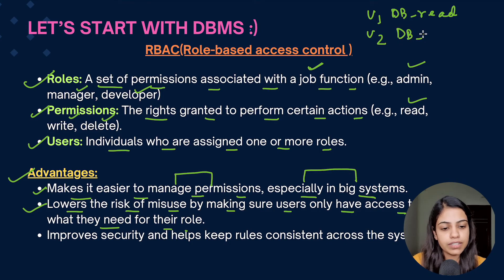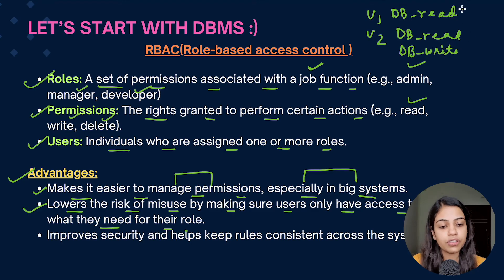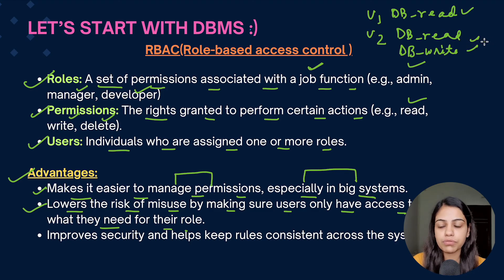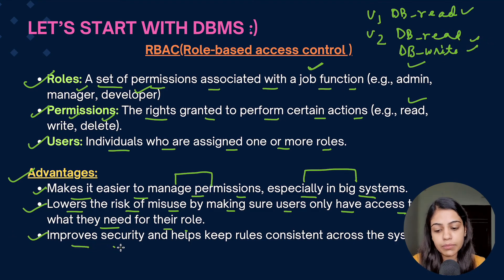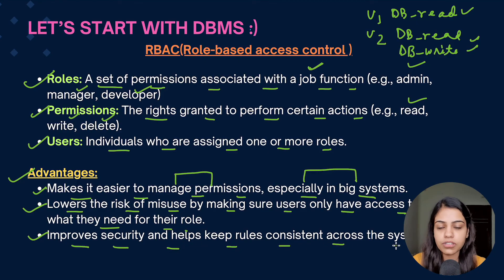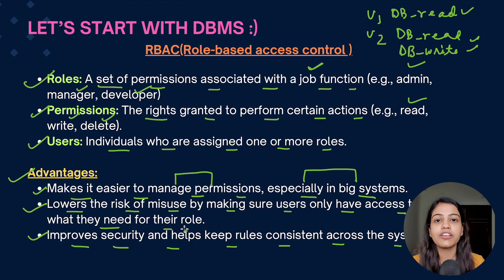For example, if user one has db_read access, they can only perform read operations. If user two has both db_read and db_write, they can modify as well as read the data. So according to the role, users can only use what's permitted and cannot misuse any data. Third, RBAC improves security and helps keep rules consistent across the system.